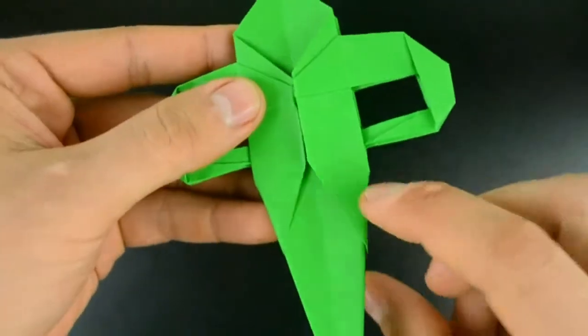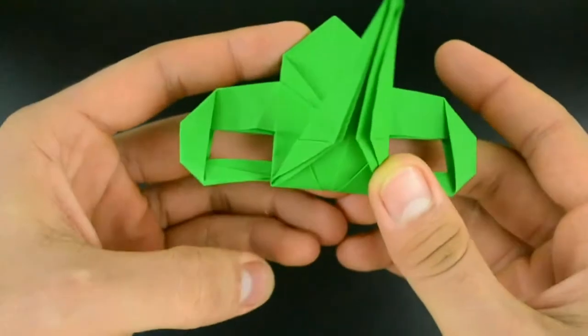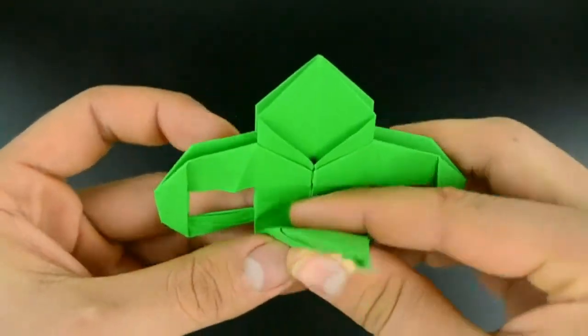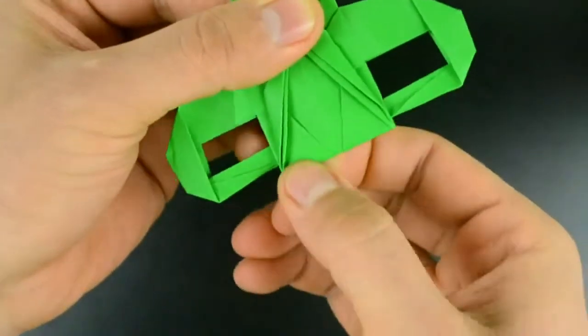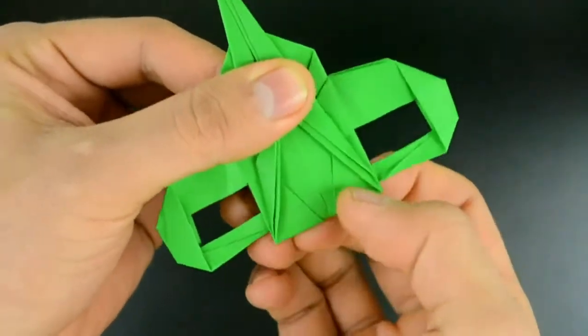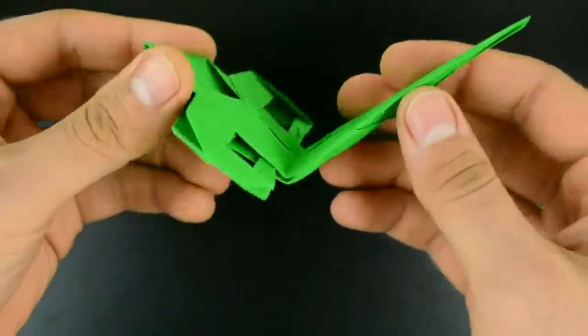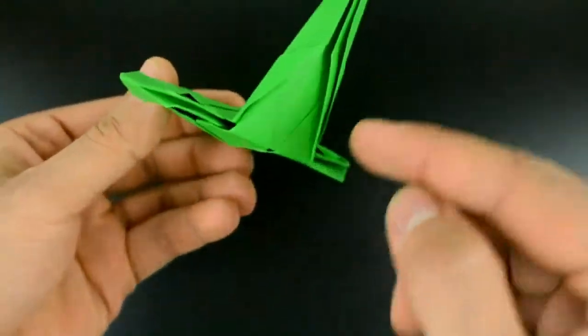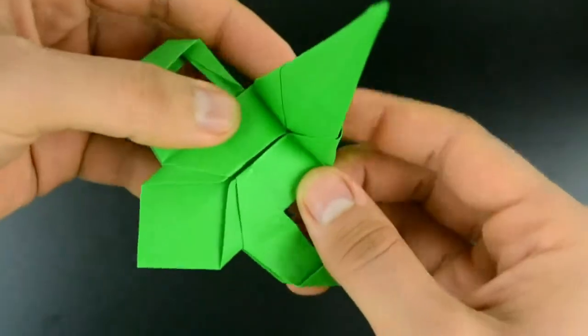First fold up this flap of the beak slightly below the eye level, more or less like this. Reinforce carefully. Now bring this flap just a little bit down, and pushing the back, let's close the paper. Making two diagonal creases.